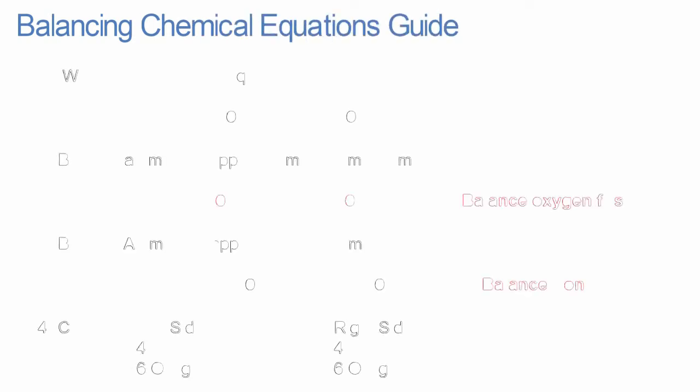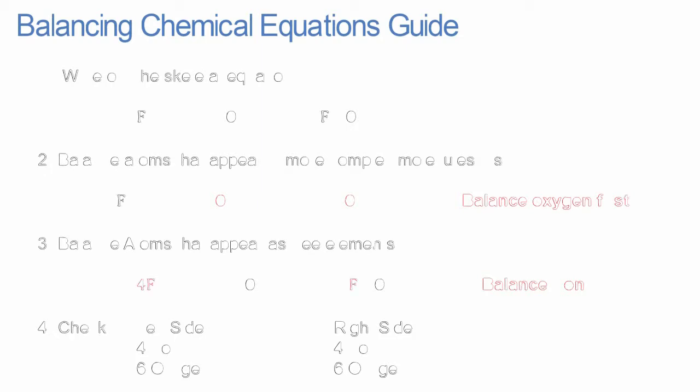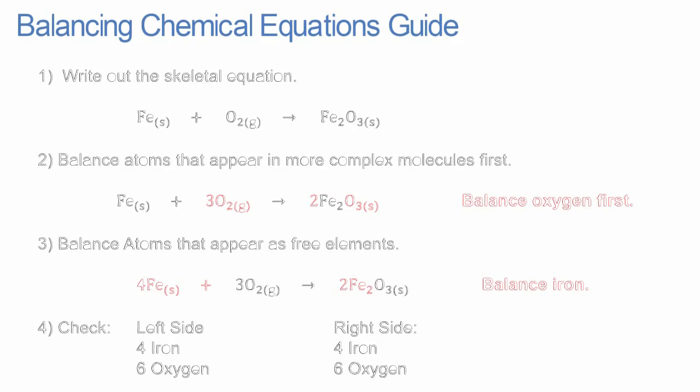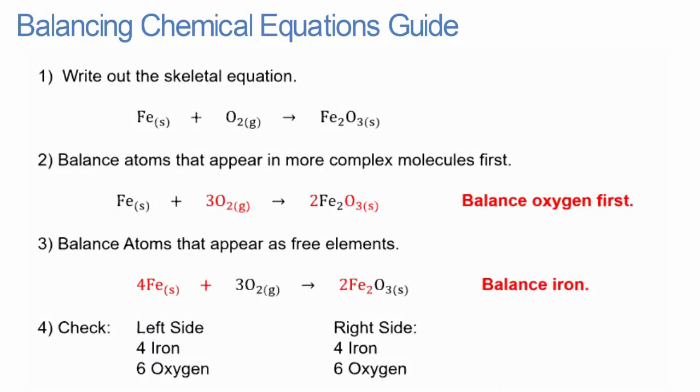There is no guaranteed method for balancing chemical equations, it takes practice to become proficient. A general guideline for balancing equations is to write out the skeletal equation first and balance atoms that appear in more complex molecules, before balancing atoms that appear as free elements. Check your answer by summing the number of atoms on each side of the reaction equation.